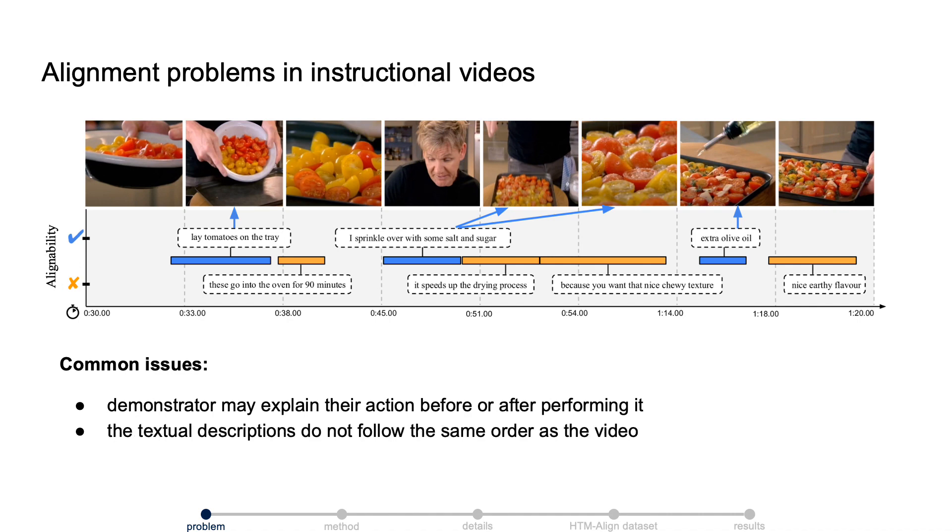Second, many of the texts are unrelated to the video. For example, describing food taste and explaining reasons. These texts are not visually alignable.